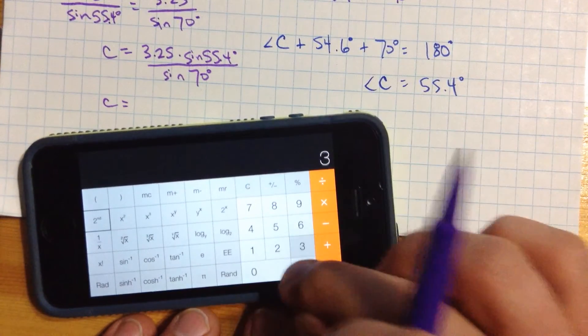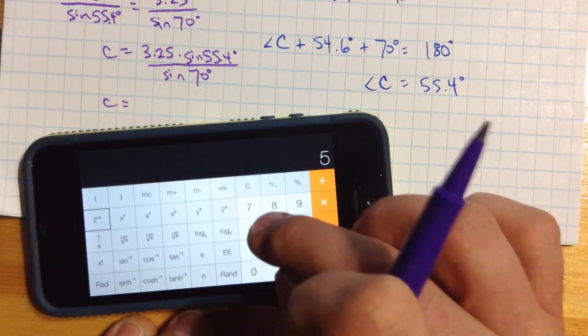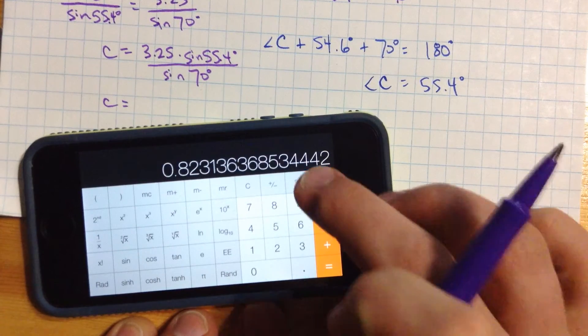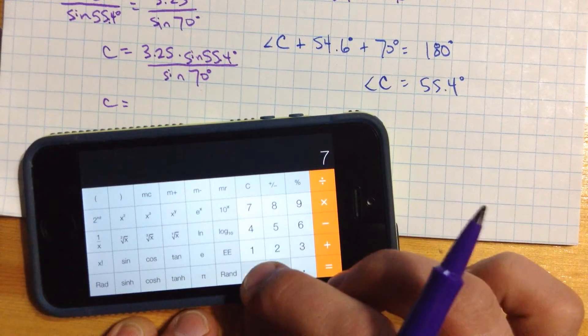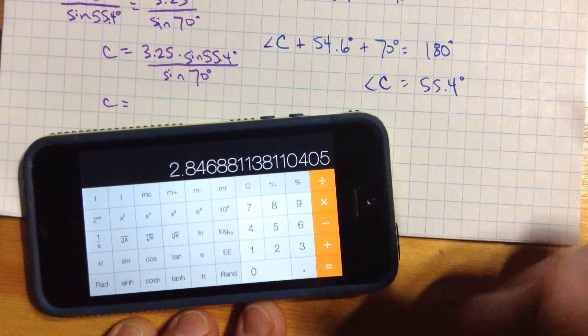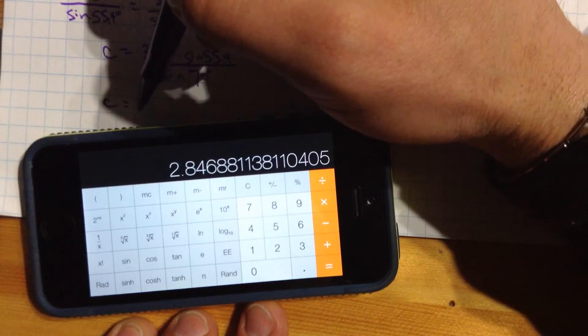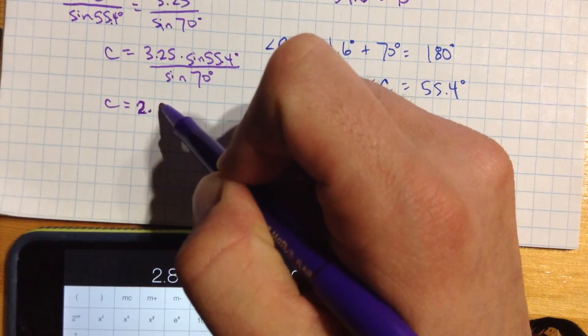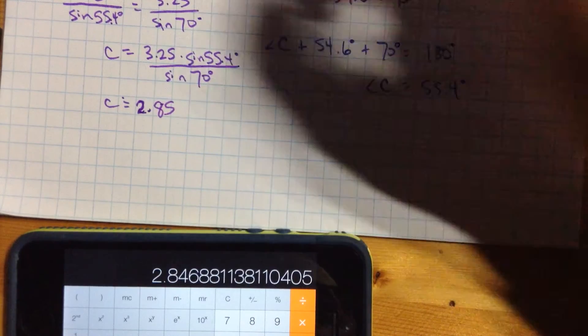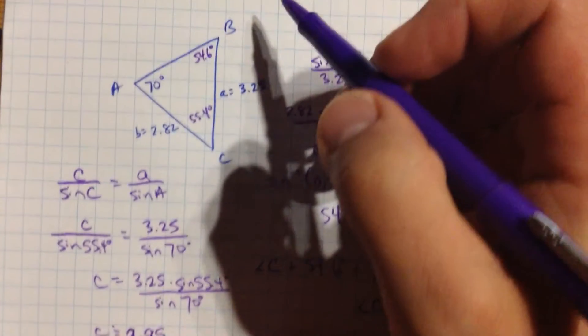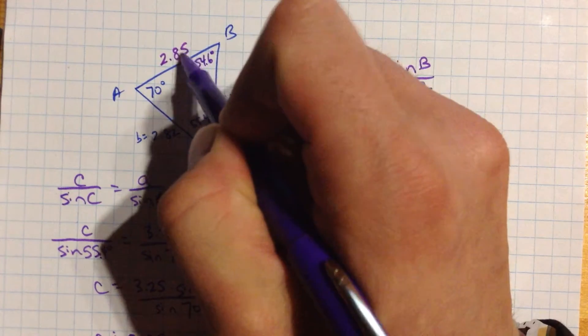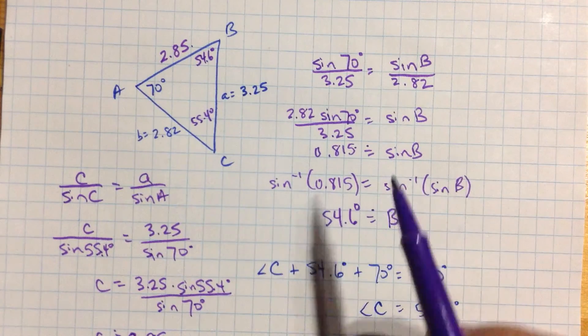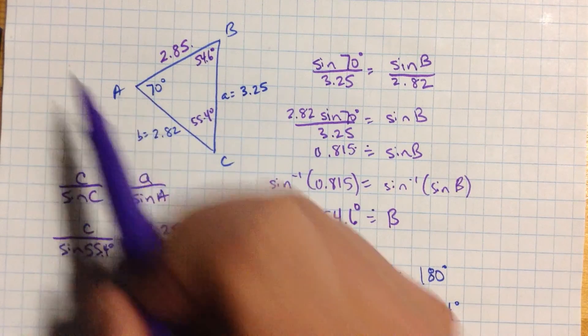3.25 times 55.4 sine divided by 70, 70 sine equals about 2.85. Approximately 2.85. Let me write that up into our diagram here. About 2.85. So now we have the three sides of the triangle and the three angles of the triangle.